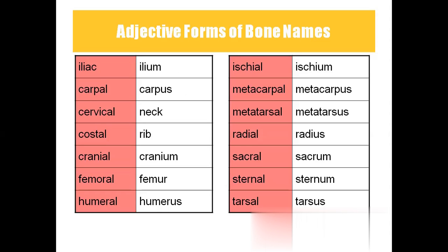Iliac means ilium. Carpal is carpus. Cervical is neck. Costal is ribs. Cranial is cranium. Femoral is the thigh bone, femur. Humeral is the upper arm bone, humerus.